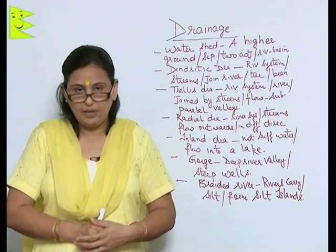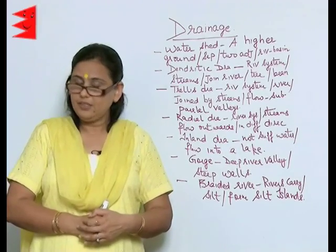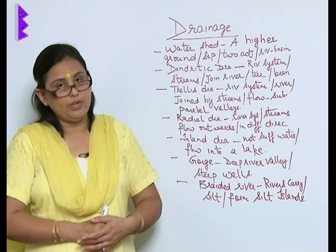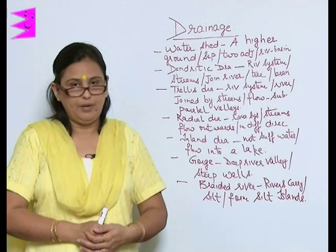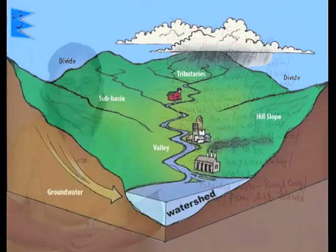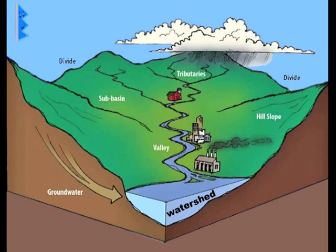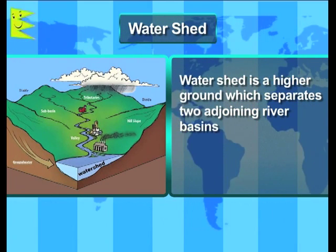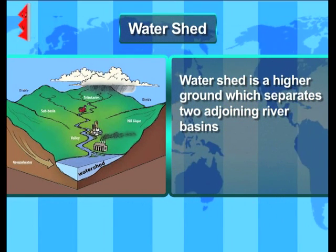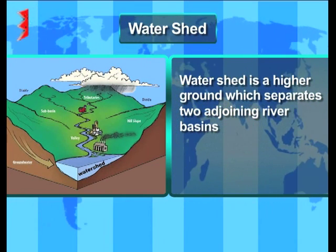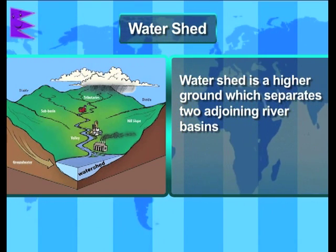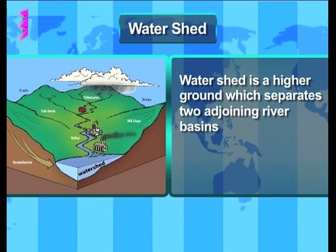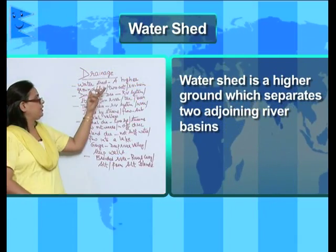Before we start with the chapter on drainage, it is very necessary for us to understand the new words, terms, and concepts which will be used in the chapter. The first is watershed. The watershed is a higher ground and it separates two adjoining river basins. It is something which is slightly elevated and separates two adjoining river basins.